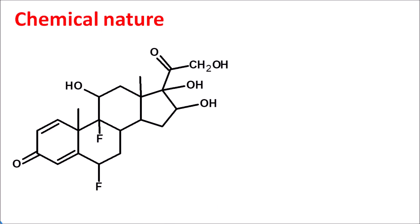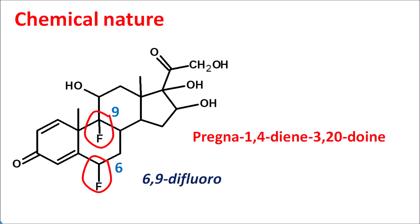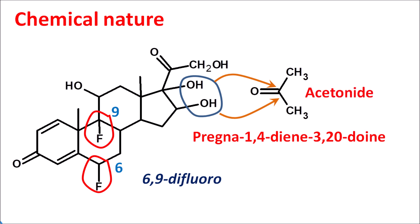Now let us see the chemical nature of this drug. This is the structure of fluocinolone acetonide. The basic nucleus is the pregnane, just like in pregnanolone, with two double bonds and two ketone groups. We can write this as pregna-1,4-diene-3,20-dione. It has fluorine groups at the sixth position as well as another fluorine group at the ninth position, so this is 6,9-difluoro. We can also observe two hydroxyl groups attached adjacently on two carbons; they can be esterified with acetone such that they form the acetonide. This is the basic structure of fluocinolone acetonide.